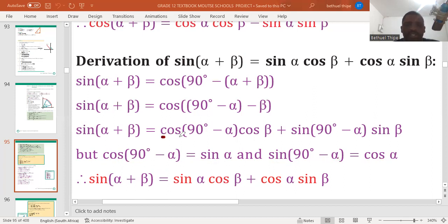Then we substitute where there is cos 90 minus alpha, we substitute by sine alpha. Where there is sine 90 degrees minus alpha, we substitute by cos alpha.